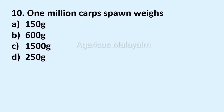10th question: 1 million carp spawn weighs — Answer options: Option A 150 grams, Option B 600 grams, Option C 1500 grams, Option D 250 grams. Correct answer: Option C 1500 grams.